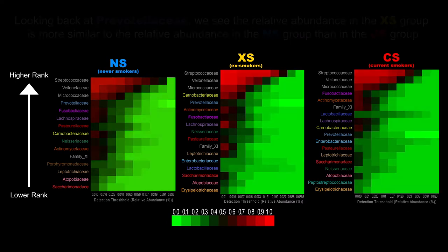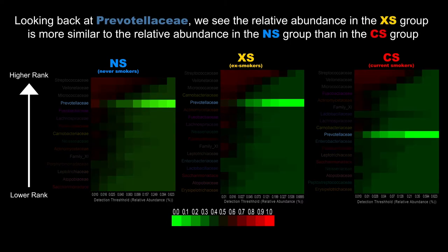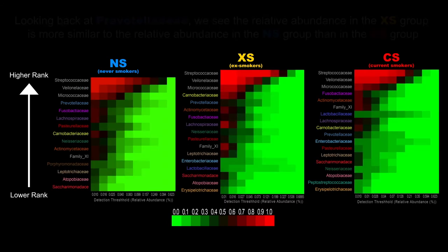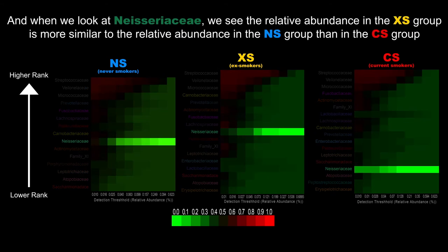Looking back at Prevotellaceae, we see that the relative abundance in the ex-smoker group is more similar to that of the NS group than in the CS group. And when we look at Neisseriaceae, we see that the relative abundance in the ex-smoker group is more similar to that of the NS group than in the CS group.